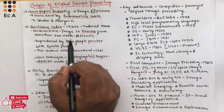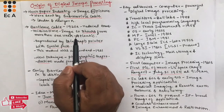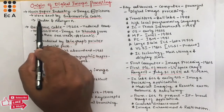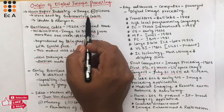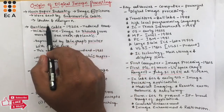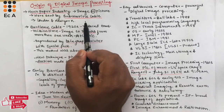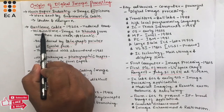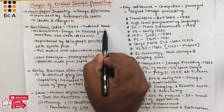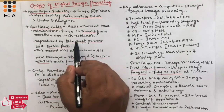In this video, we will understand from where the application of images started — when was the first application of images used. The first application of images was in the newspaper industry, where pictures or images were sent by submarine cable between London and New York. This is the first instance where the application of images were used. Then there was the introduction of the Bartlein cable transmission system in the early 1920s, which reduced the transmission time of images to 3 hours from more than 1 week across the Atlantic.